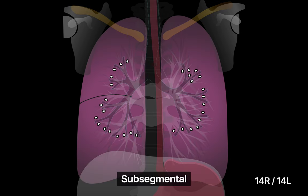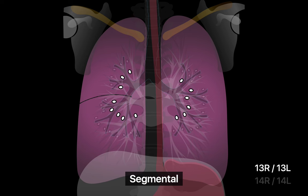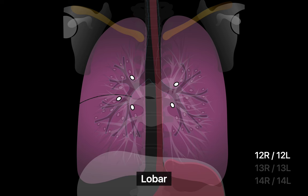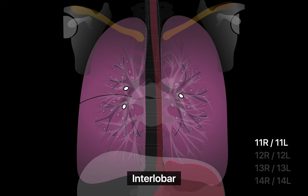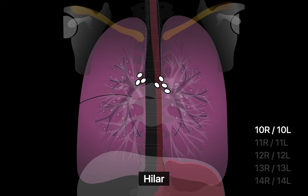Subsegmental lymph nodes are found next to the subsegmental bronchi, designated station 14R on the right and 14L on the left. Segmental lymph nodes are next to the segmental bronchi, station 13R and 13L. Interlobar lymph nodes sit between the origins of the lobar bronchi, station 11R and 11L. Hilar lymph nodes abut the main stem bronchi and hilar vessels, in addition to the proximal portions of the pulmonary veins and main pulmonary arteries, station 10R and 10L.